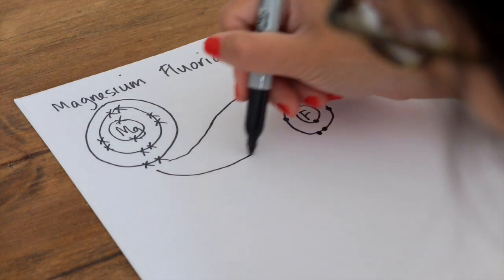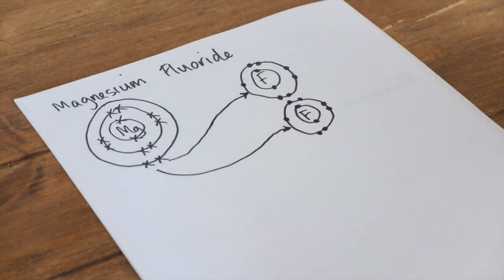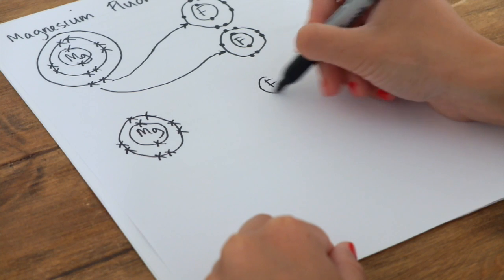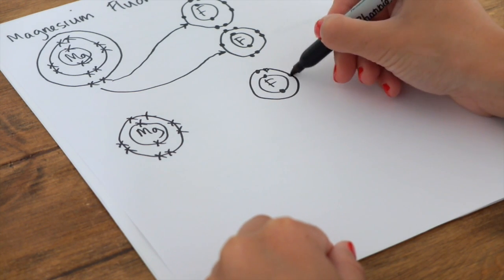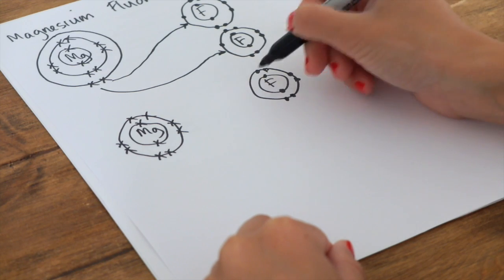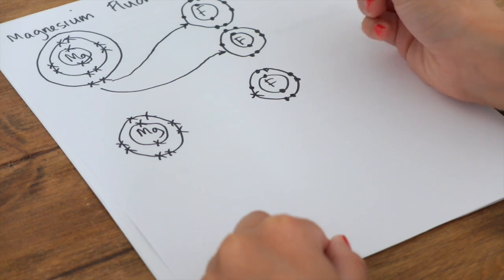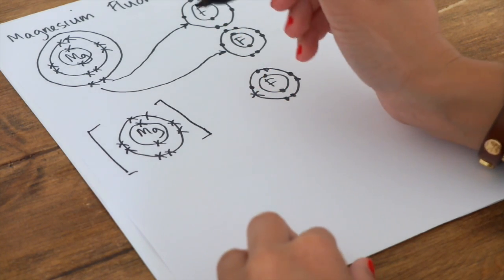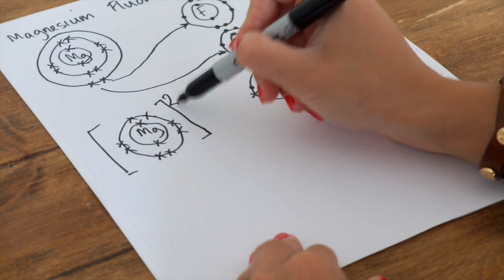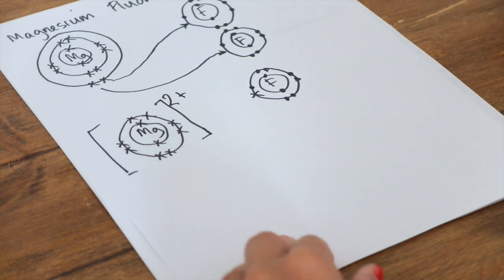So in terms of your actual answer that you're giving the exam, let's quickly do fluorine. I don't realize how boring it is drawing out these electron diagrams. Okay, so let's sort out the brackets. So magnesium has lost two electrons, so it's lost two negative charges, so therefore by definition it has a 2 plus charge.